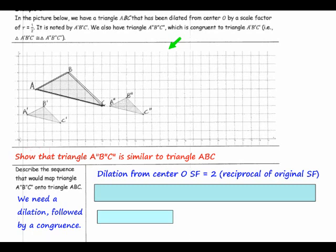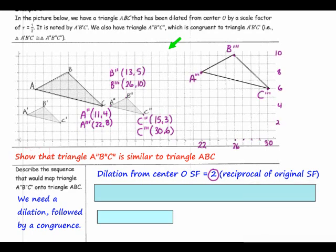Our first step is a dilation from center O using a scale factor of two, which is the reciprocal of the original scale factor. To do the dilation, we take each point and write down the original coordinates. The coordinates of A double prime are 11, 4. Dilating with a scale factor of two, we multiply each of those coordinates by two — that will be called A triple prime. Then graph that point. Repeat the process for B double prime and C double prime, graph your triangle and label it. The dilation of two made it the right size.